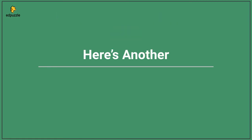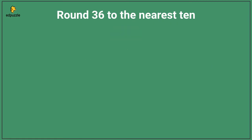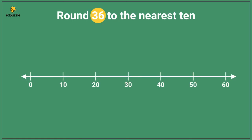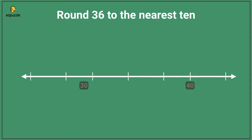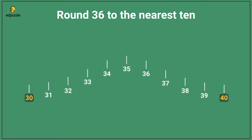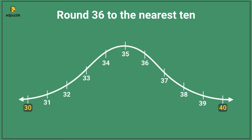Here's another problem. Let's round thirty-six to the nearest ten. On a number line of tens, which two numbers is thirty-six between? Thirty-six is more than ten, more than twenty, more than thirty, but it's less than forty. So it's somewhere in the middle of thirty and forty. Now when we zoom in on our number line and imagine it as a hill, where should we put our ball? We'll put it right at thirty-six. And now looking at this hill, what is thirty-six rounded to the nearest ten?